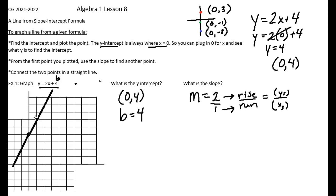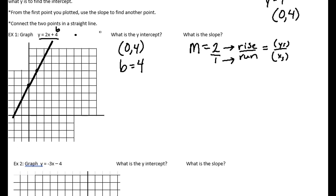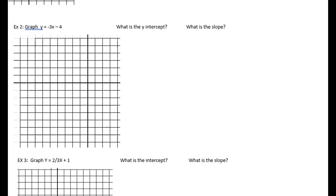The line goes in both directions through those two points. Remember that a line goes in both directions, so we don't just stop. So there we have graphed it. Let's do another one. From y equals mx plus b, the y-intercept is negative four and the slope is negative three.